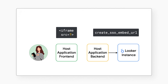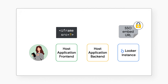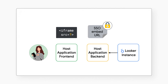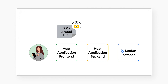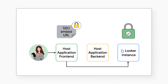Your backend calls the Create SSO Embed URL endpoint with the parameters we previously discussed. The Looker instance generates the SSO embed URL and returns it to your host application backend. The backend returns the URL to the frontend, and it sets the URL on the iframe's source. With your Looker content now embedded in an iframe, your user accesses the embedded Looker content. Looker starts the session with the permissions and properties provided by the SSO embed URL, and logs the user in as an embed user.